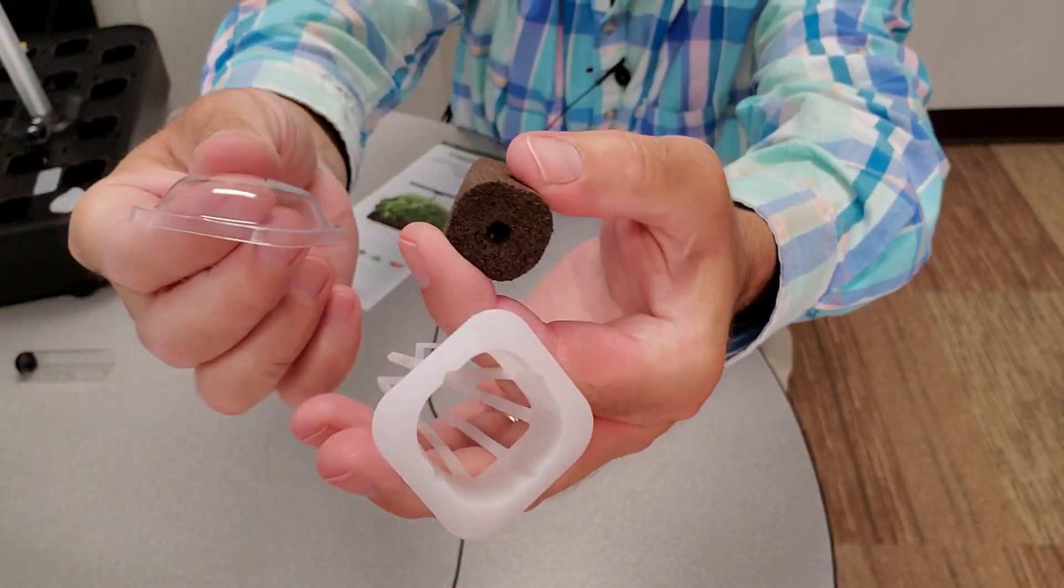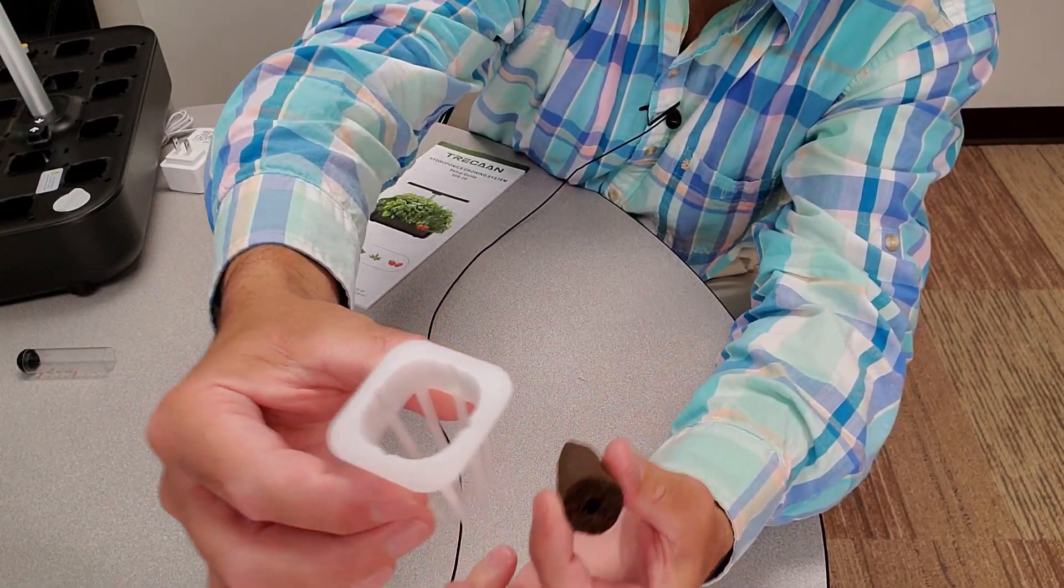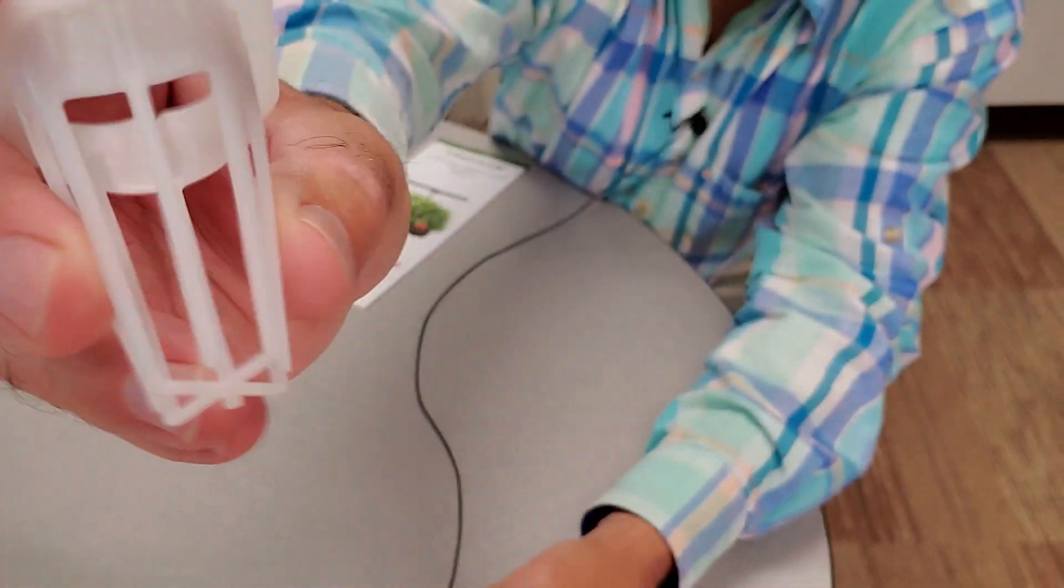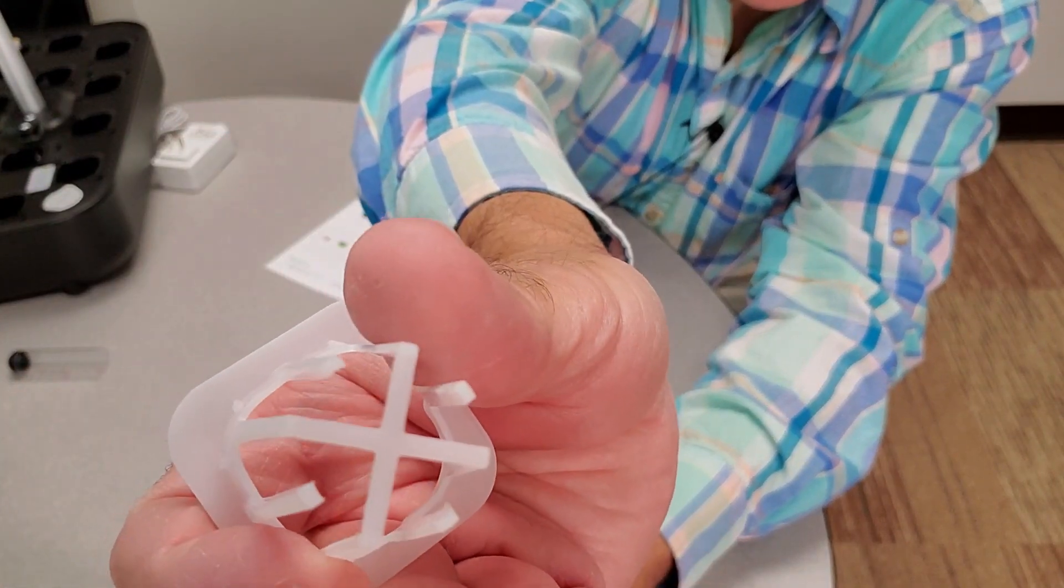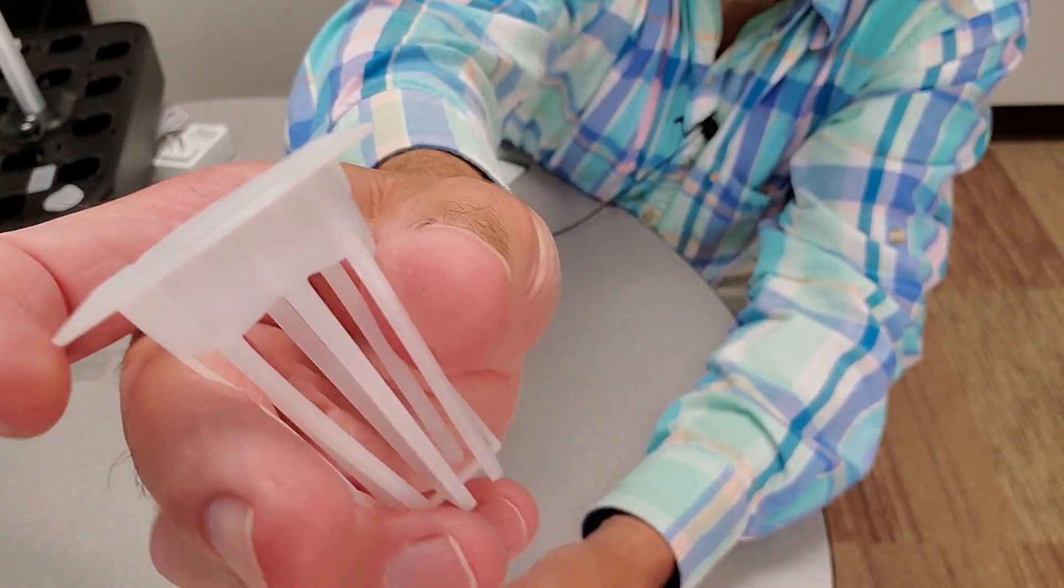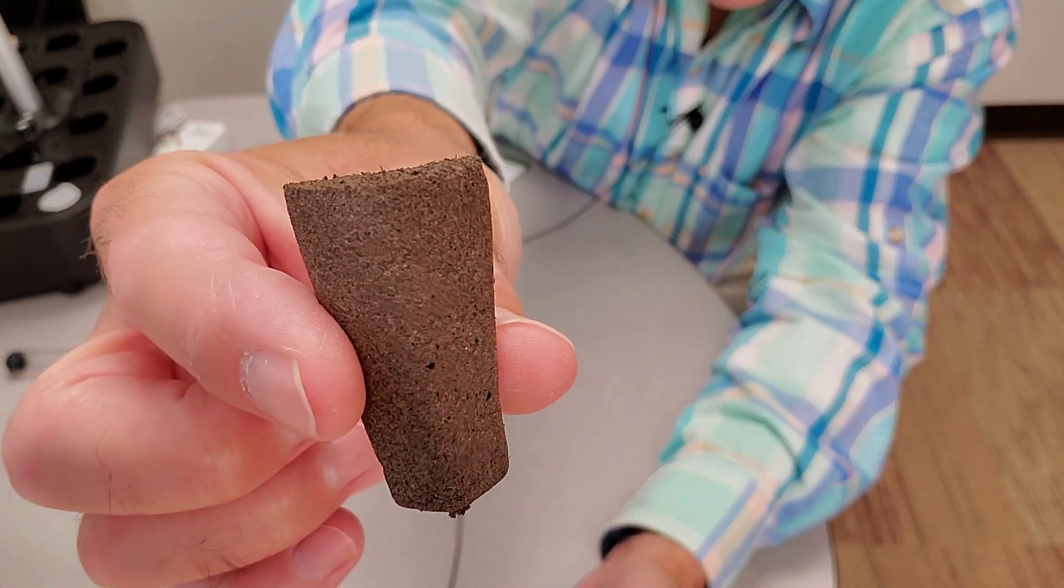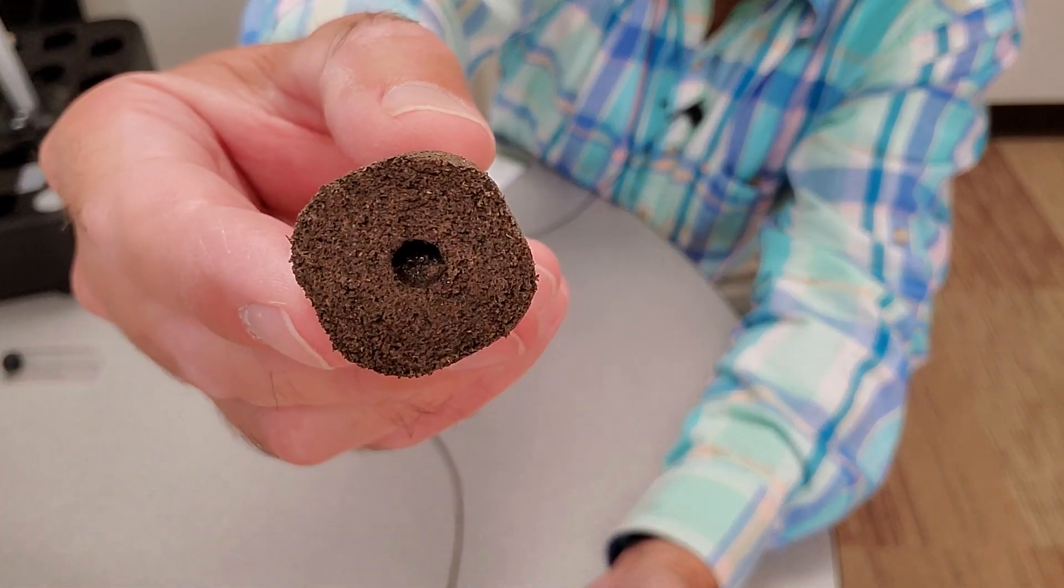So here you have the planting components. This is a close-up of the basket. And you can see on the bottom of the basket that it does resemble the AeroGarden. It has this foam planting plug. There's the spot for the seed.